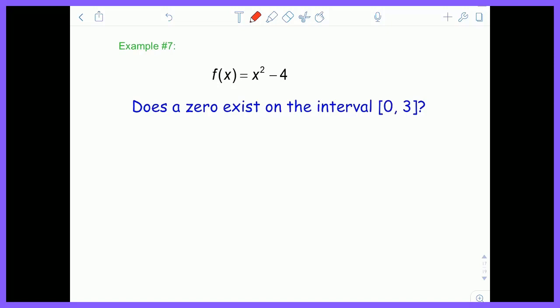To use the intermediate value theorem, we first examine the function values at the endpoints. f(0) = -4, and f(3) = 3² - 4 = 5. So the question is: if the y values start at -4 and go to 5, will they pass 0 on the way? Because that's what a zero is—when f(x) = 0, when the y value equals 0. Well, the answer is yes.